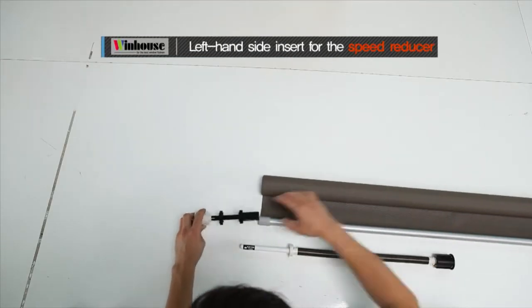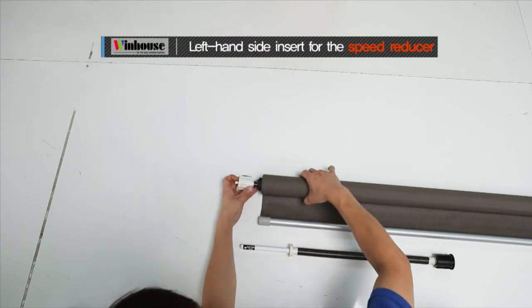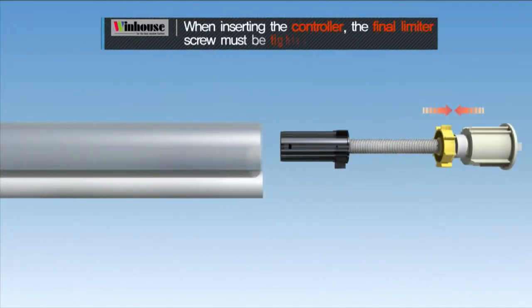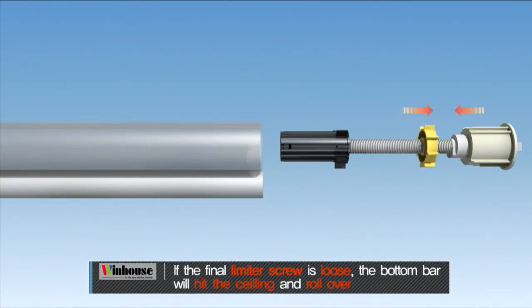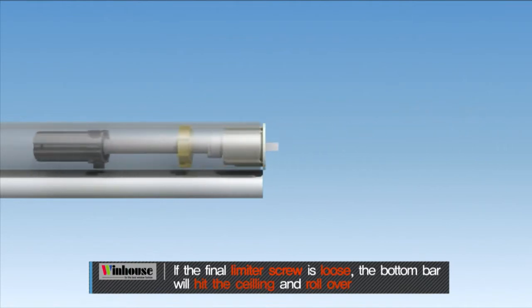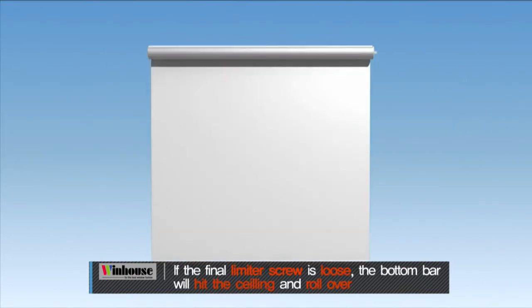Left hand side insert for the speed reducer. Warning: when inserting the controller, the final limiter screw must be tightened to the end. If the final limiter screw is loose, the bottom bar will hit the ceiling and roll over.